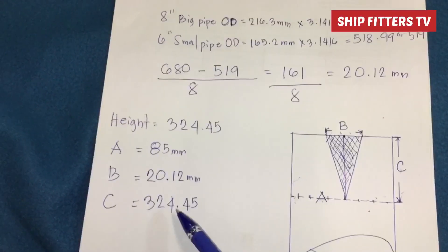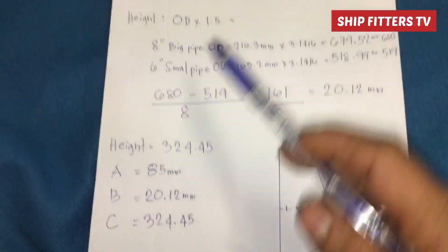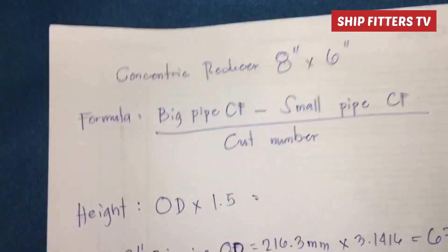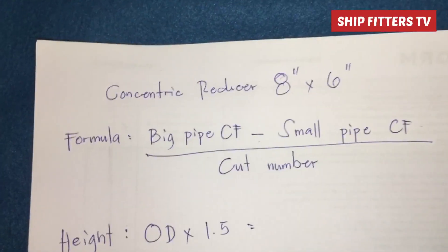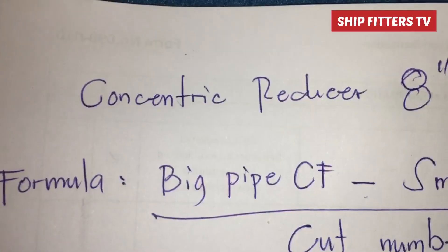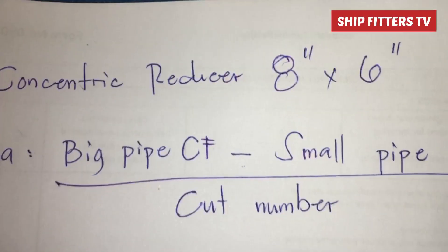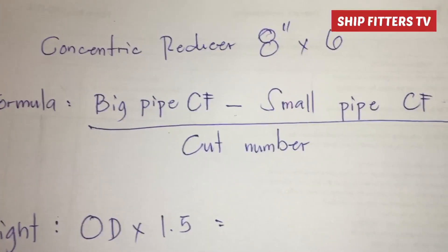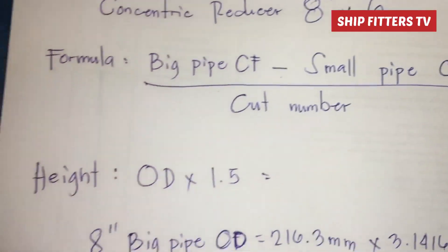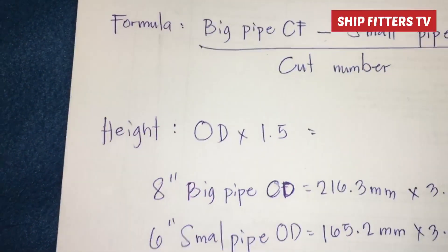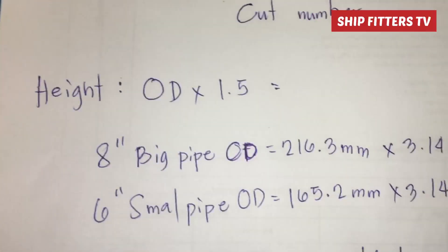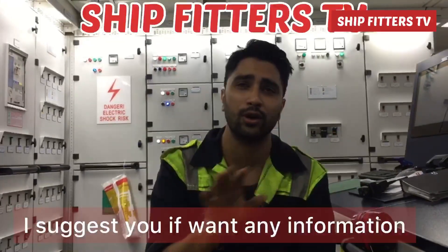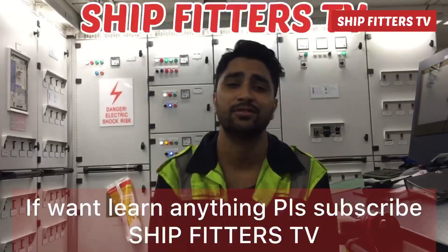The height is 324.45 mm. This is the formula for the concentric reducer. I've shown this so you will understand how to make a reducer. I'll suggest that if you want more information or want to learn more, please subscribe to SHIPS PTL TV.